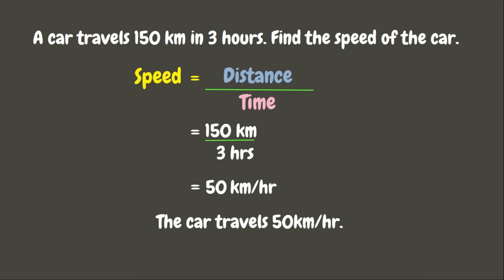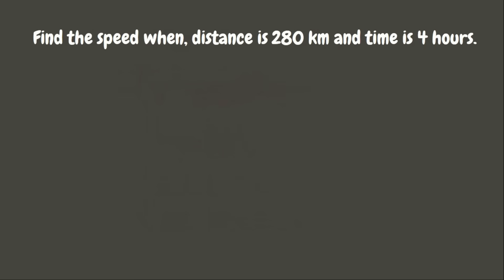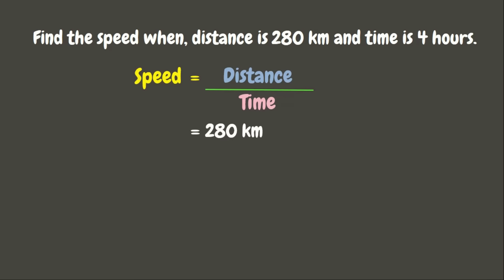Now, let's have another example. Find the speed when the distance is 280 kilometers and the time is 4 hours. Again, to solve for the speed, we are going to divide the distance by the time. Here, the distance is 280 kilometers and the time is 4 hours. Now, let us solve: 280 divided by 4 is 70. So, that would be 70 kilometers per hour.